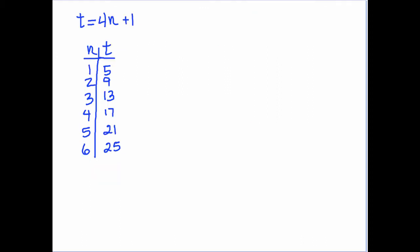As a preview to later chapters, consider a function rule that looks like this: 4n plus 1 equals t. If we make a table starting with n equals 1, 4 times 1 is 4, plus 1 is 5, and so on. Turning the t values into a sequence gives us: 5, 9, 13, 17, 21, 25. The common difference is 4.